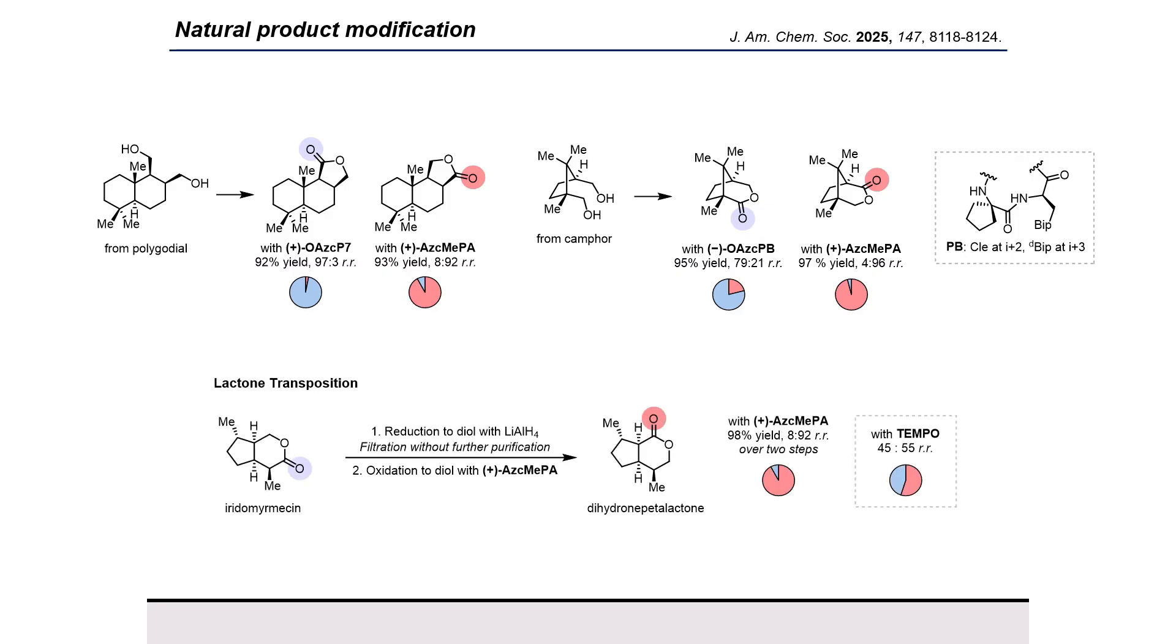Finally, we performed a two-step lactone transposition, allowing for vector adjustment of the lactone carbonyl, which has been shown to exert large influences on key interactions between bioactive compounds and protein binding sites in other contexts. By reduction with lithium aluminum hydride, filtration without further purification, and oxidation with ASC-MEPA, we were able to transpose iridodermecin to dihydronepetalactone in 98% yield and 92% selectivity.